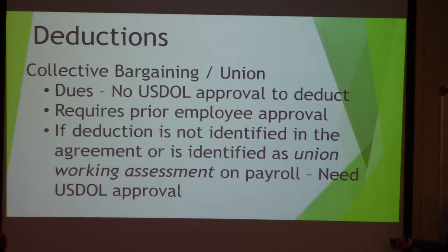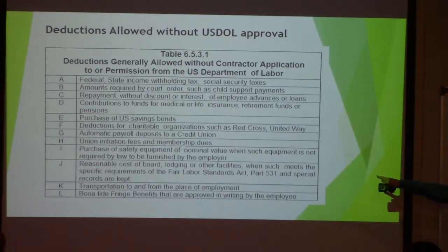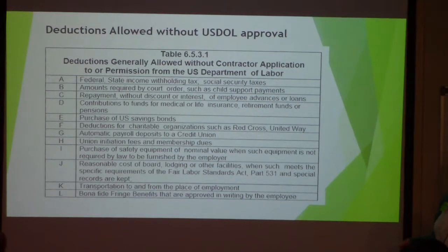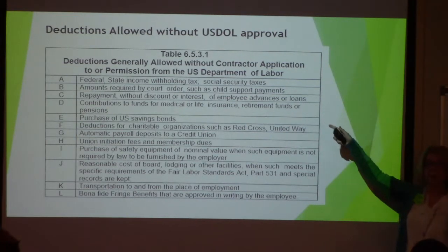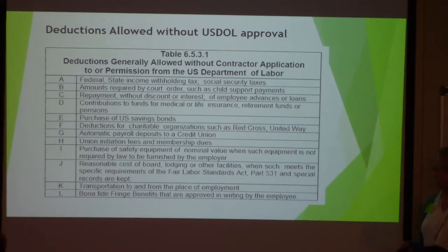You're going to see a lot of unions, especially working in the Miami area. They'll sometimes send you their agreement automatically so you can tell exactly what is there. Deductions allowed without USDOL approval include: federal and state income taxes, Social Security taxes, court orders including child support, repayment of advances without discount or interest, contributions to funds and medical insurance, purchase of US Savings Bonds, and contributions to charitable organizations like Red Cross and United Way.